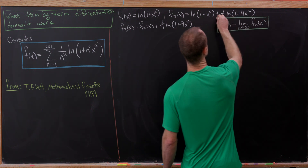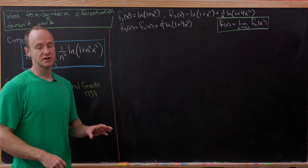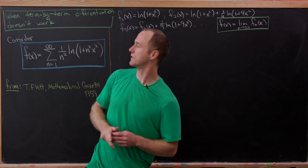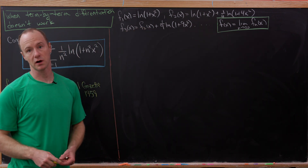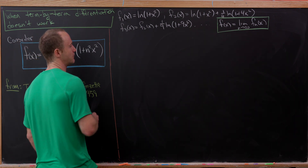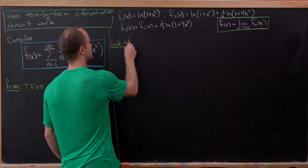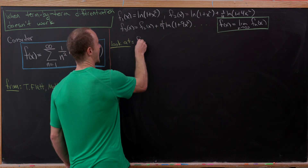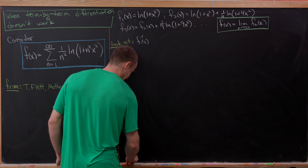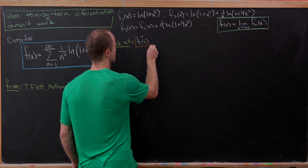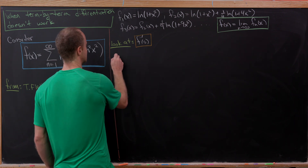We've written it as a sum, but it's really thought of as the limit of the partial sums. Our goal is to show that term-by-term differentiation does not work, and we're going to show it doesn't work at a specific point that's easy to work with. Let's look at the derivative of f at 0 — we'll bound it below by some number.